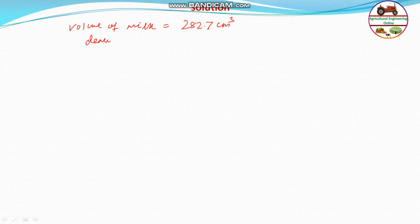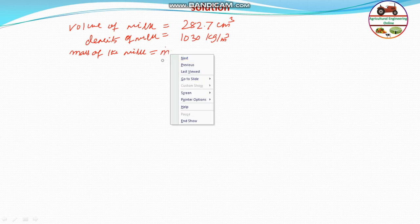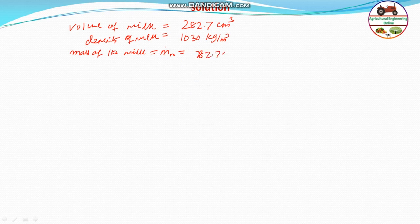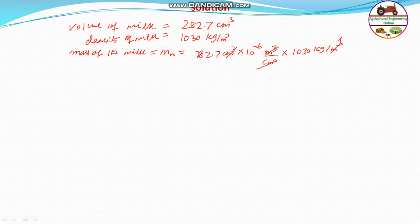First of all, the volume of the milk is given: 282.7 cm³. The density of milk is given as 1030 kg/m³. Since volume is in cm³ and density is in m³, we quickly convert to find the mass of milk to be heated. That is 282.7 cm³ multiplied by 10⁻⁶ m³/cm³, times 1030 kg/m³. The m³ cancels out, giving 0.291 kg of milk to be heated.